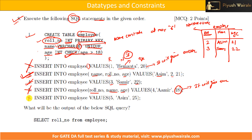The sixth statement inserts values 5, 'asim', 25. Role number 5 is unique, so that is fine. 'Asim' has only four characters, satisfying the varchar(6) data type. However, there is already a record with name 'asim' in the table, and the name column has a unique constraint — so I cannot insert another 'asim'. This will also throw an error. Therefore, I can only insert the second and third records.